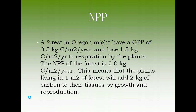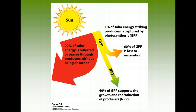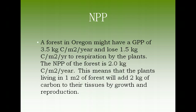For the test, note that numbers given are easy to work with without a calculator. Example: forests in Oregon might have a GPP of 3.5 kg C/m²/yr and lose 1.5 kg C/m²/yr to plant respiration. Therefore, NPP = 3.5 − 1.5 = 2.0 kg C/m²/yr. That means plants in one square meter of forest add 2 kg of carbon to their tissues through growth and reproduction. Net primary productivity = gross minus respiration.